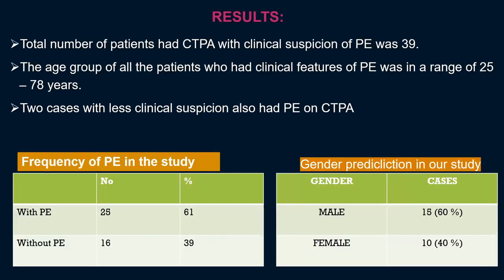Coming to the results, among the total patients, 39 had a high clinical suspicion for CT pulmonary angiography and 2 had less clinical suspicion. The age range was 25 to 78 years. The frequency of pulmonary embolism was 25 patients, corresponding to 61%, while 16 patients did not have embolism, corresponding to 39%. Of those with pulmonary embolism, 60% were male and 40% were female.